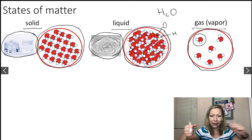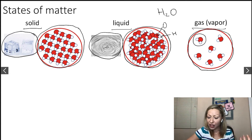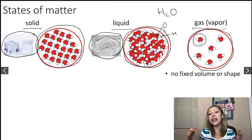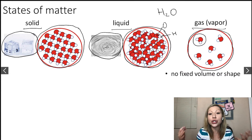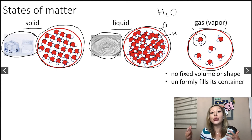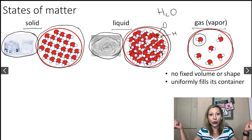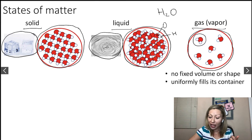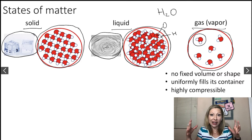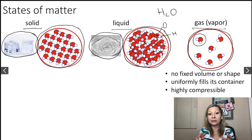Now let's talk about the vapor phase. Gases are actually pretty far away from each other, so they zoom around really, really fast. Due to that, they have no fixed volume or shape. On top of that, they will uniformly fill their container. Because the water molecules in the vapor phase are so far away from each other, you can compress them to a high extent.